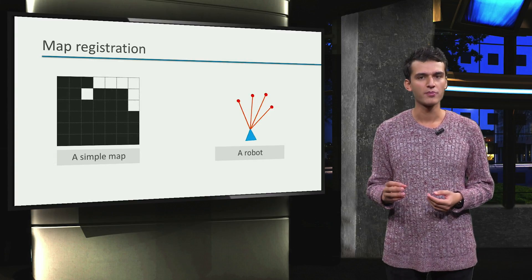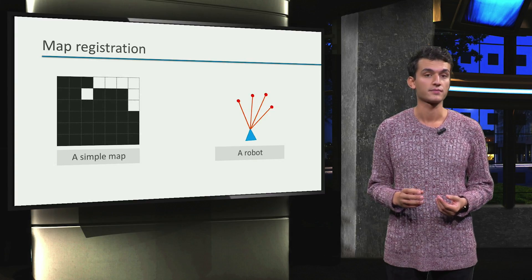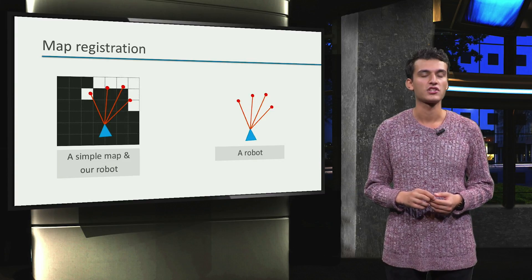Now we will try to match the measurements of the robot with the map. Doing so we can guess where the robot is. As you see, this seems like a viable position for the robot to be, depending on its measurements.